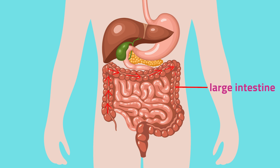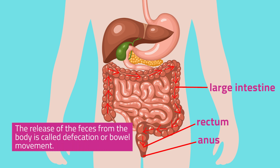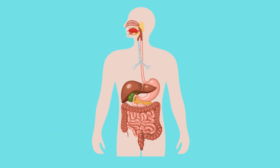But what happens to the undigested food materials? The undigested food moves to the large intestine, which absorbs water from it, turning it into a solid mass. The solid mass of undigested food stays in the rectum for a while before it is excreted through the anus as feces. The release of feces from the body is called defecation, or bowel movement.